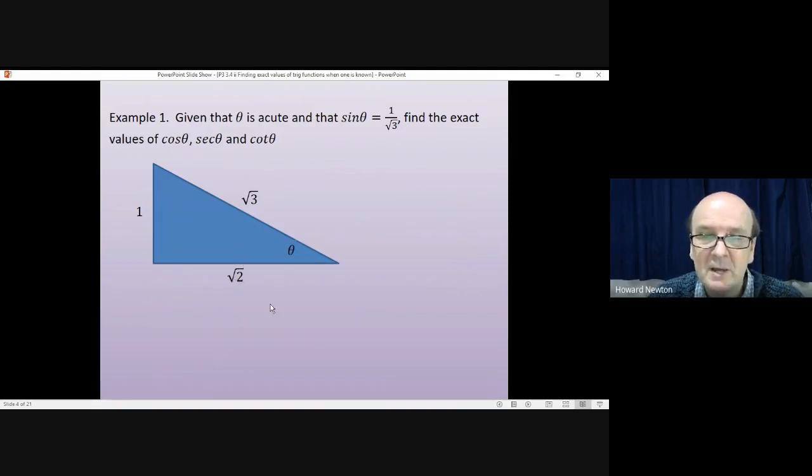Well, that's adjacent over hypotenuse. So cos theta will be root 2 divided by root 3, which you could write as 1 square root if you wanted to. Square root of 2 over 3. Sec theta.